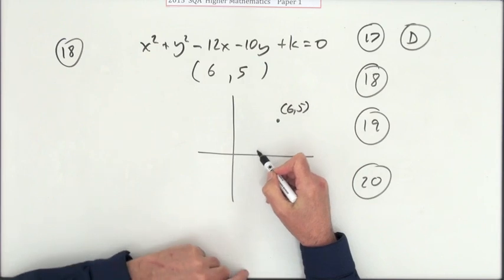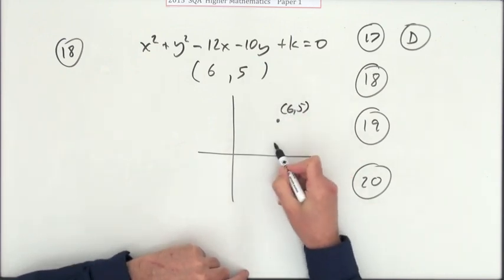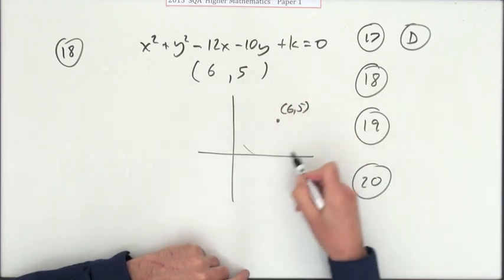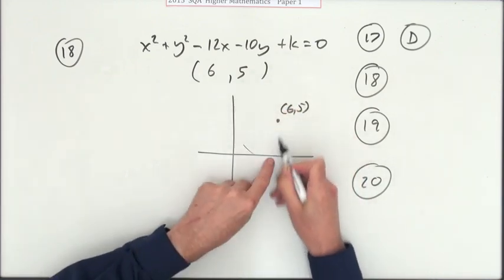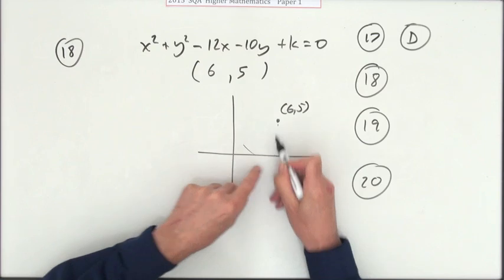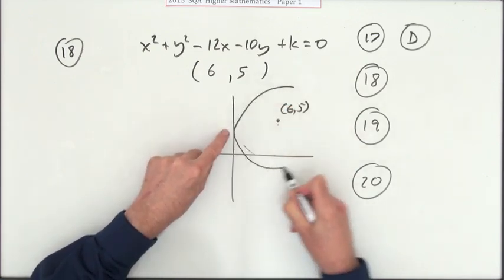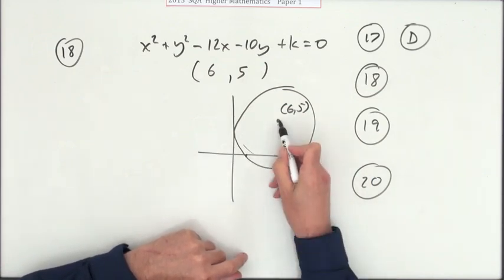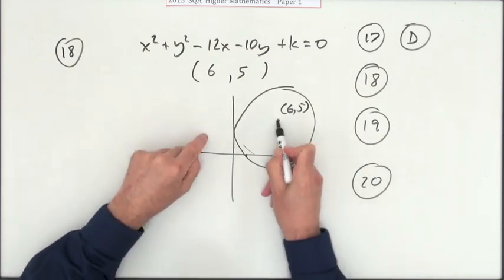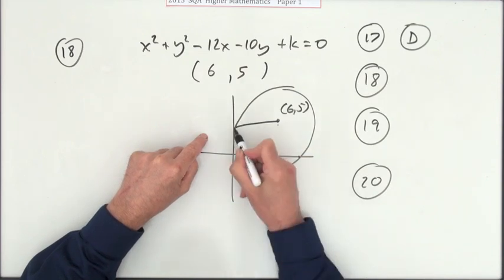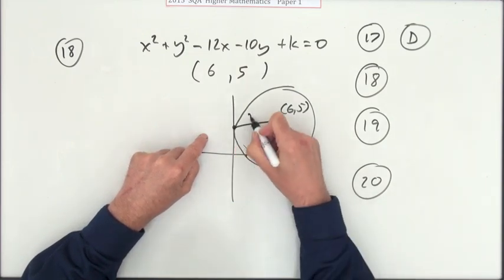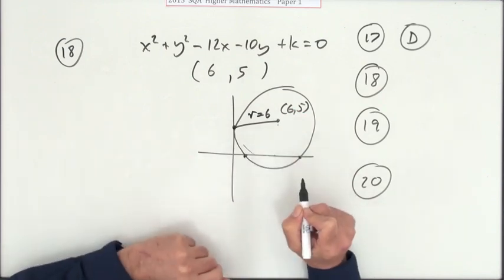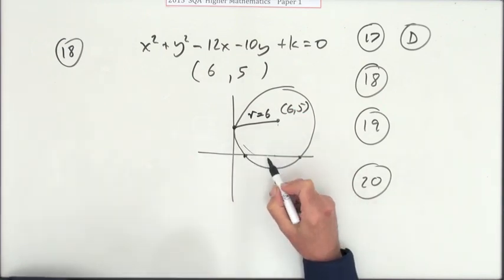Now there are various sizes of radius, but if it's to cut the axis then it'll have to be big enough to reach them. It reaches this one first because it's only five away, but to reach this one you'd have to go six, and that's when it would just graze it. It would cut that twice because that's five away, and if I'm going six it's going to go beyond it. So if you make the radius six, then it will touch three times.